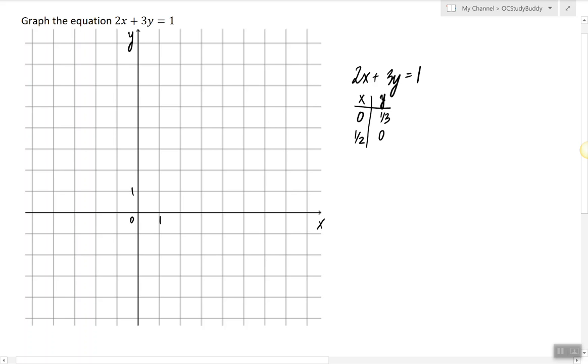The point (0, 1/3) is my y-intercept and the point (1/2, 0) is my x-intercept. So we have a point here and we have a point here.